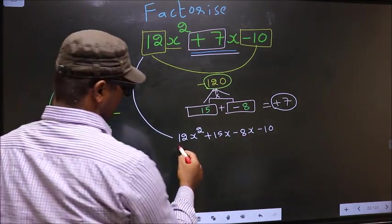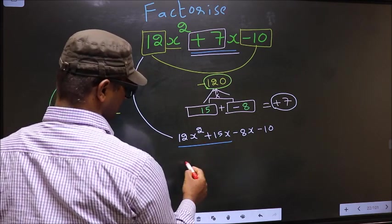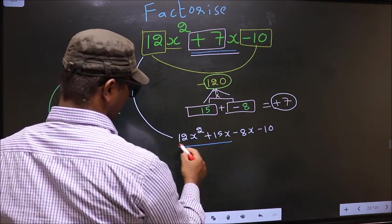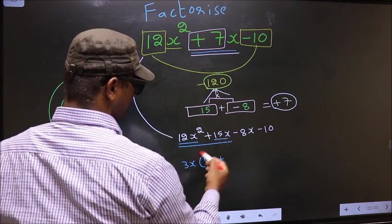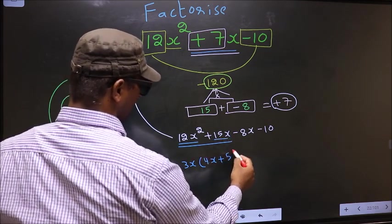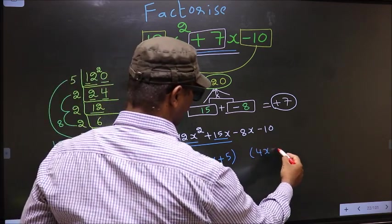Now from these two terms, what can be taken out common is 3x. So here we get 4x, plus from this 3x out means we get 5. Now whatever we got here, here also we should get the same thing.